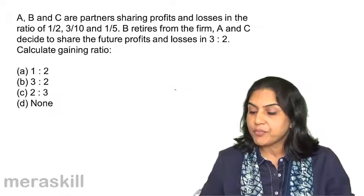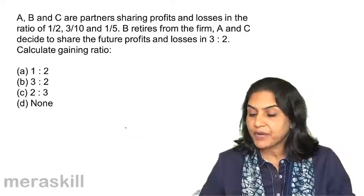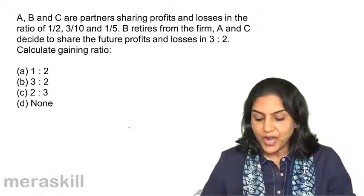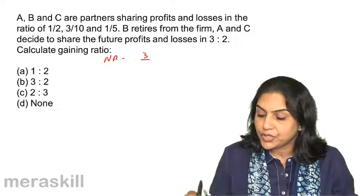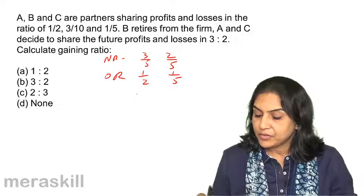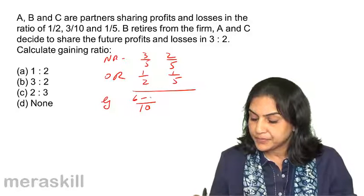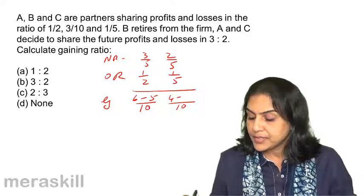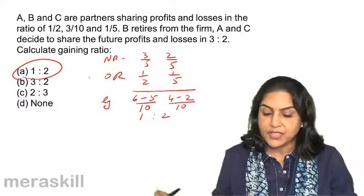A, B and C are partners sharing profits and losses in the ratio 1/2, 3/10 and 1/5. B retires from the firm. A and C decide to share profits and losses in 3:2. Calculate the gaining ratio. New ratio: 3/5 and 2/5. Old ratio — B retires — it's 1/2 and 1/5. Taking 10 as common: gain for A is 6 minus 5 = 1, gain for C is 4 minus 2 = 2. So 1:2. Correct answer is A.